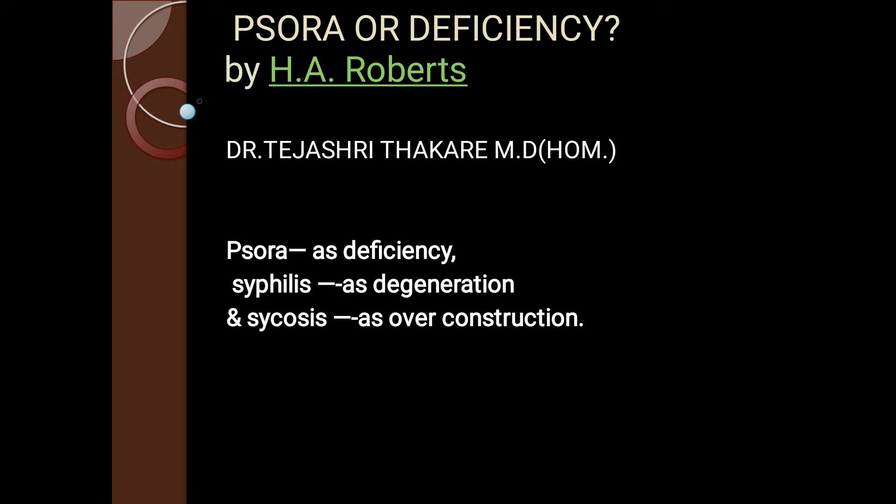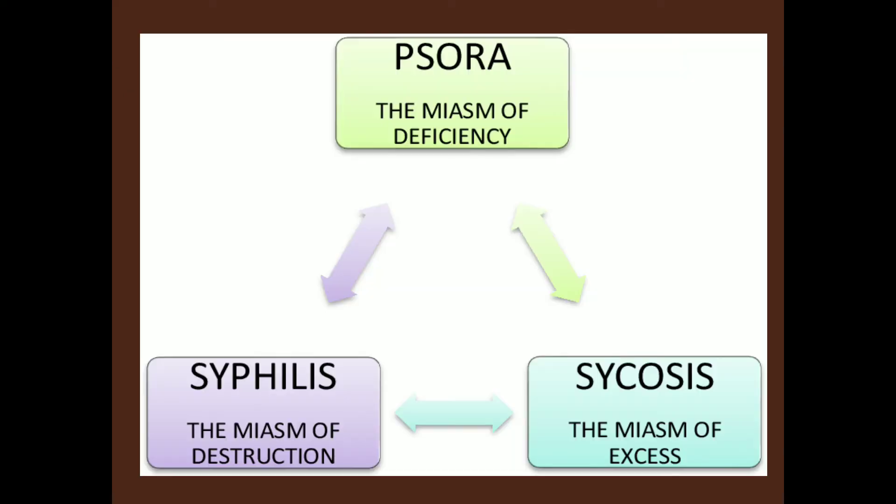Let's study the next topic: Psora, or deficiency, from H.A. Roberts' Philosophy, Principles and Practice of Homeopathy. Roberts explained the miasm Psora as a deficiency, Syphilis as a degeneration, and Sycosis as an over-construction. Psora is the miasm of deficiency, Sycosis the miasm of excess, and Syphilis the miasm of destruction.